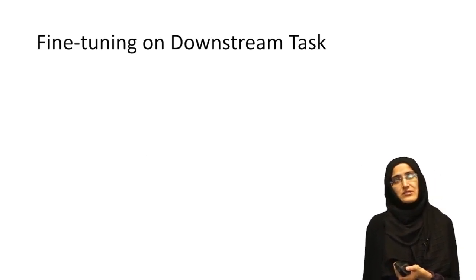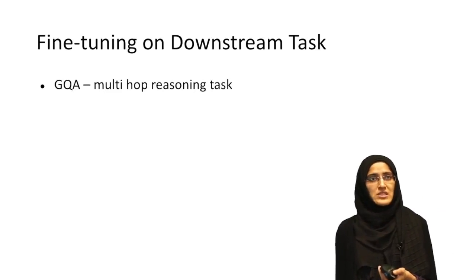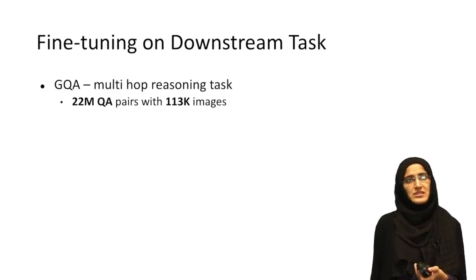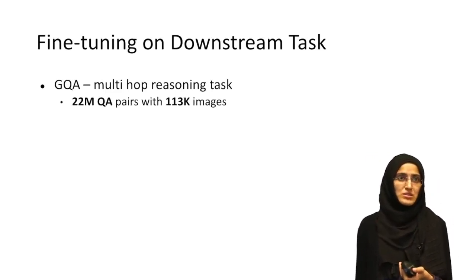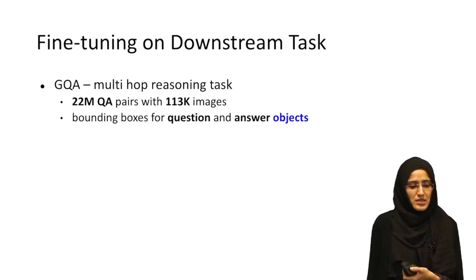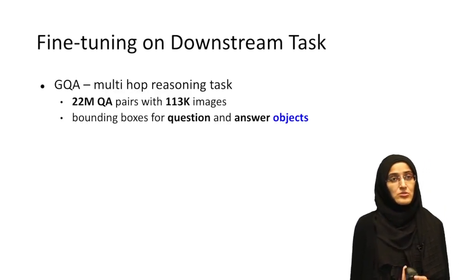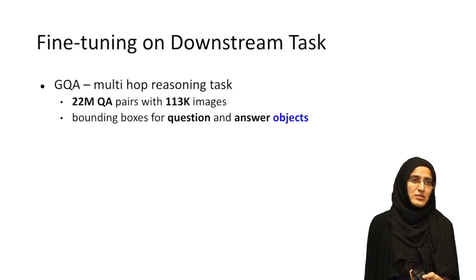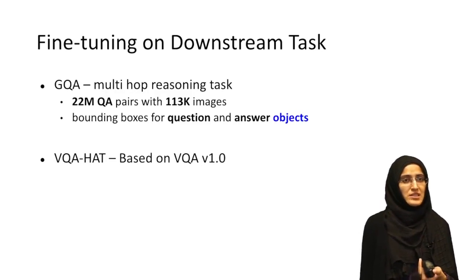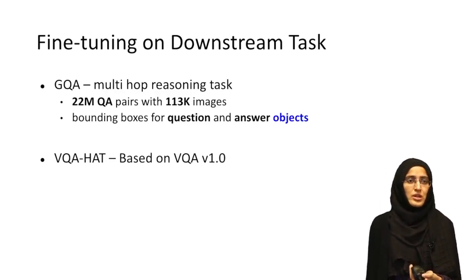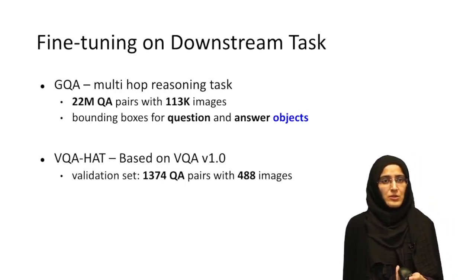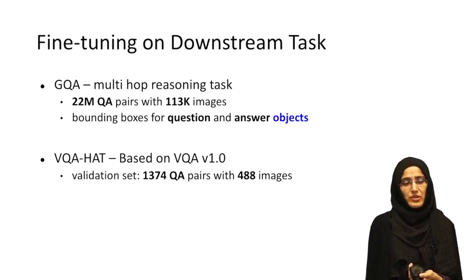For fine-tuning on downstream tasks, we use two benchmarks. First is GQA, a multi-hop reasoning VQA task with 22 million question-answer pairs and 113K images in the unbalanced version. GQA provides grounding boxes for question-answer objects, making it possible to evaluate grounding performance. The second dataset is VQA HAT (VQA Human Attention Map), based on VQA version 1.0, which provides human attention maps for each image, with 1374 question-answer pairs and 488 images.